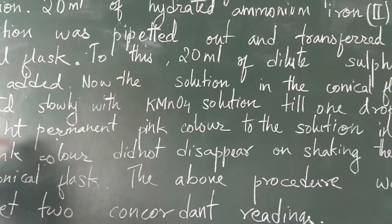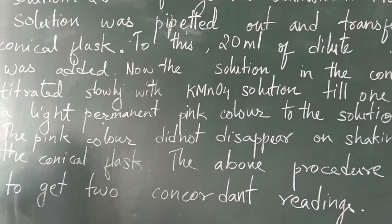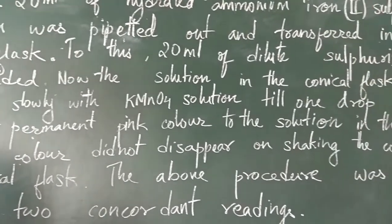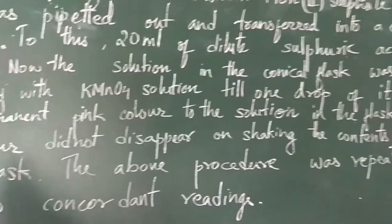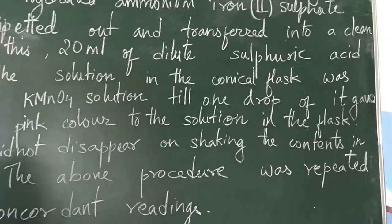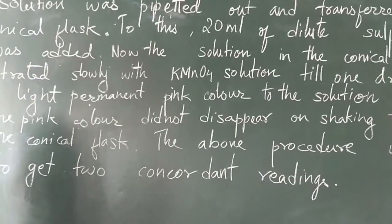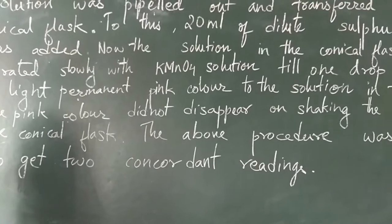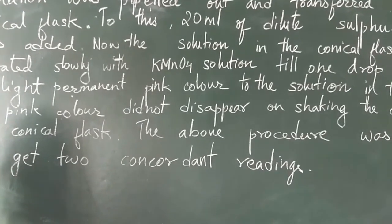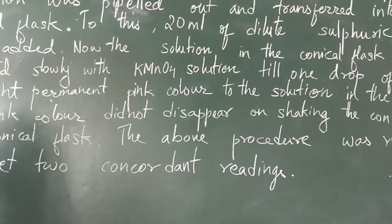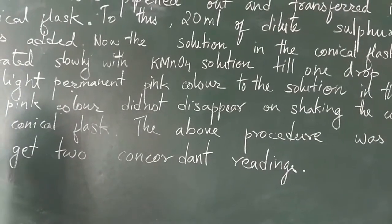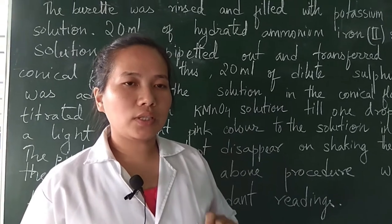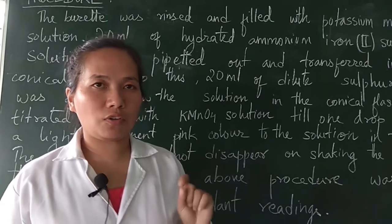Then the mixture is titrated against the KMnO4 solution. You slowly transfer the solution from the burette into the conical flask till the last drop of KMnO4 gives a permanent light pink color to the solution. The appearance of permanent pink color indicates complete oxidation of hydrated ammonium iron 2 sulfate solution by KMnO4. Note down whatever value you get in the burette for further calculation.